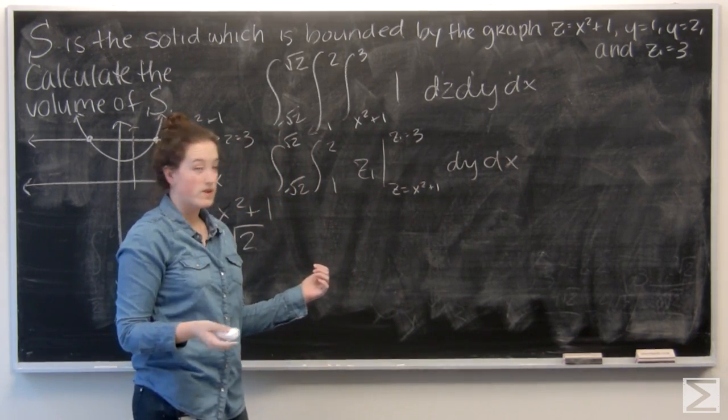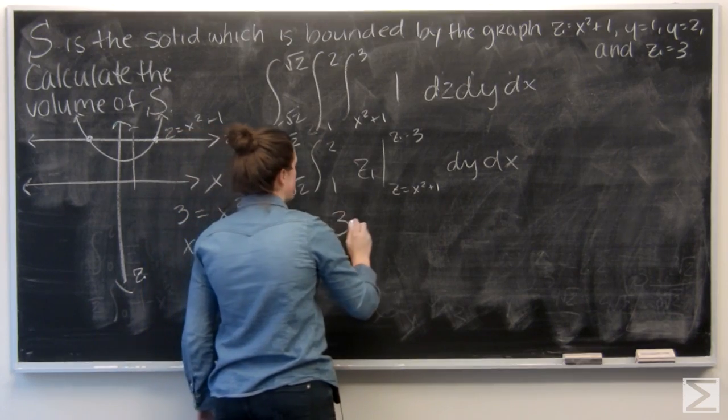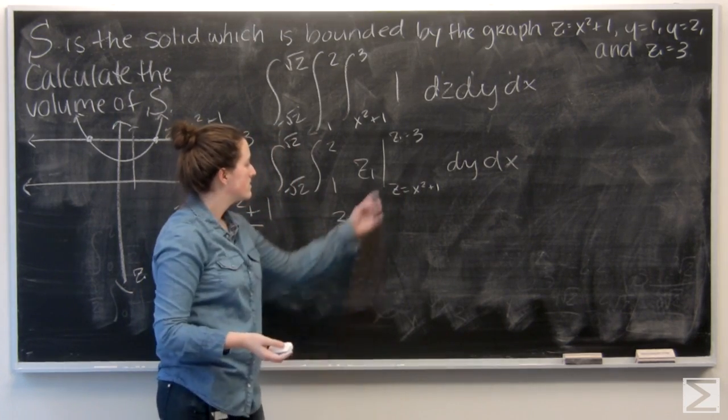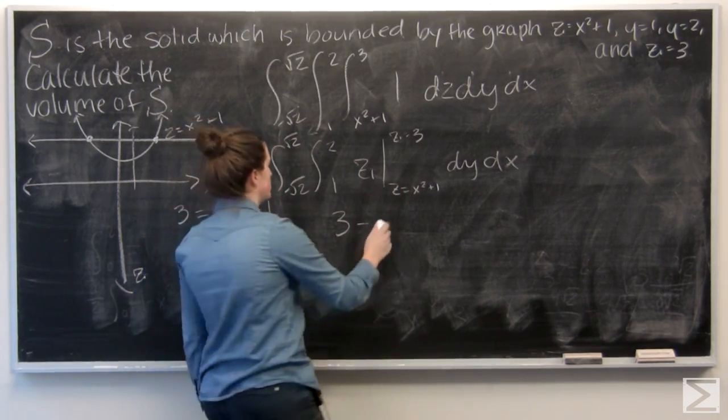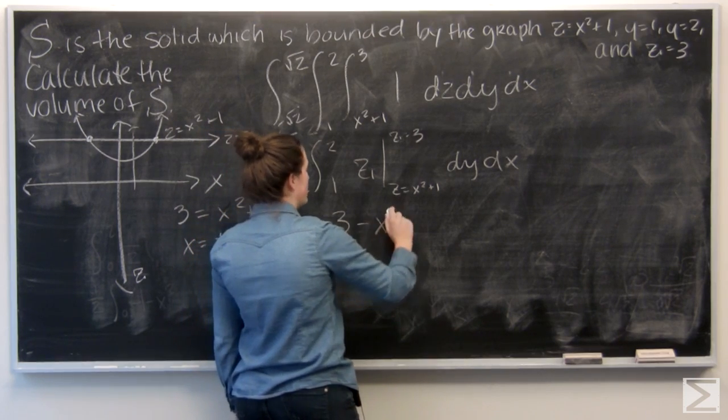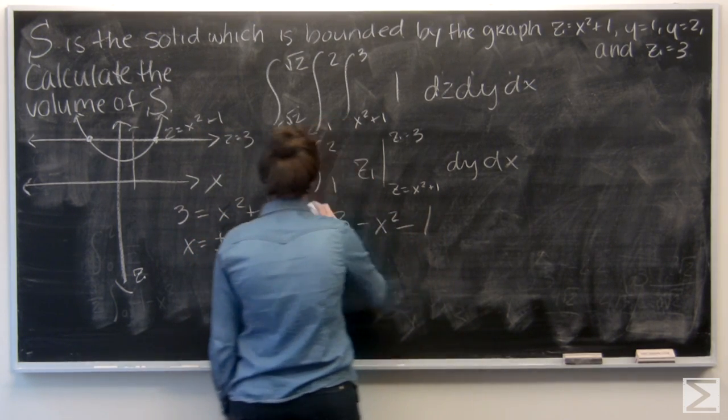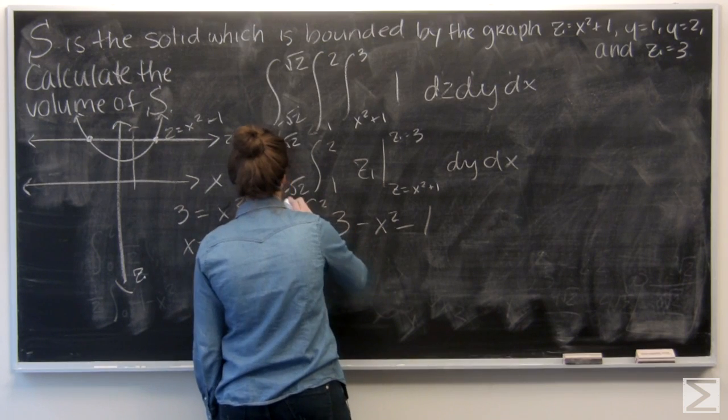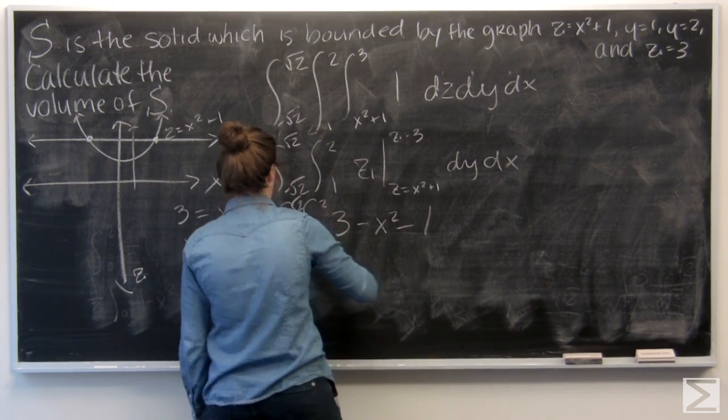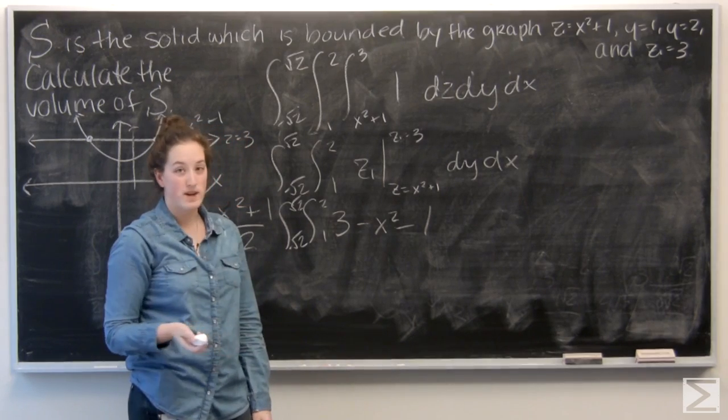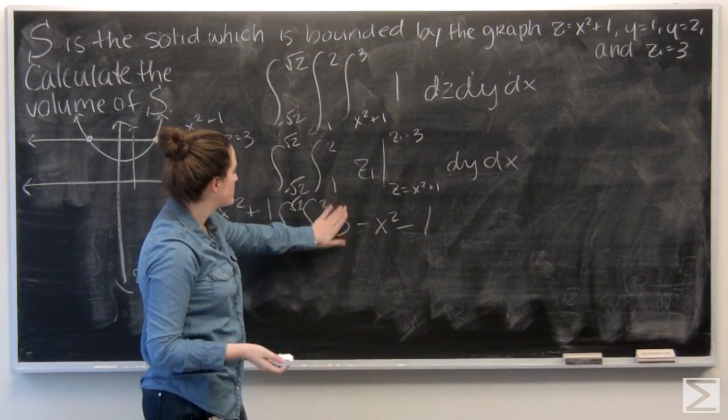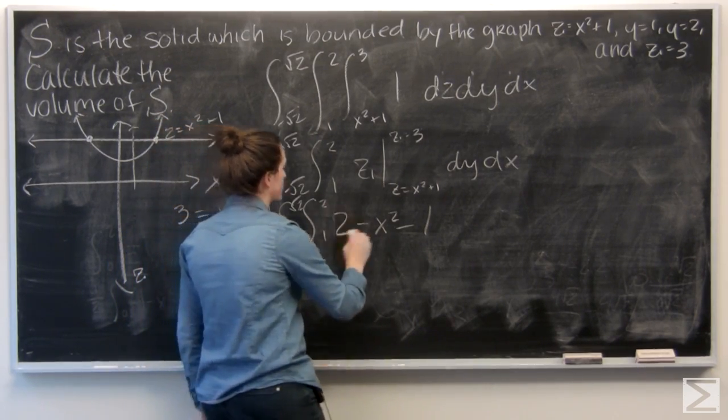So let me plug in 3 first for z, and then I want to subtract x squared plus 1. So I'm looking at 3 minus x squared minus 1. Well, 3 minus 1 is 2. Let me go ahead and fix that.